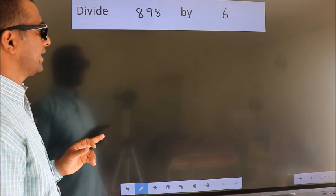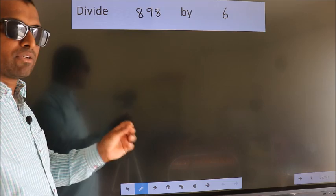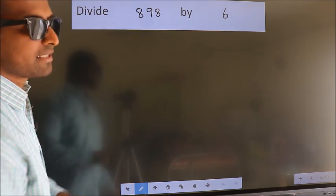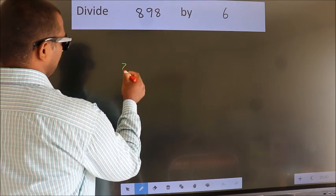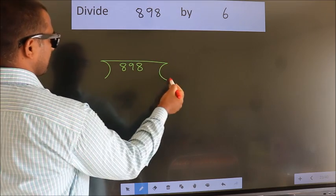Divide 898 by 6. To do this division, we should frame it in this way. 898 here, 6 here.